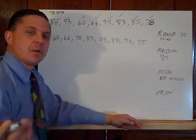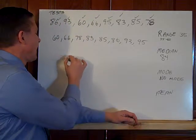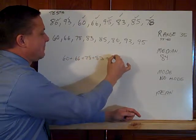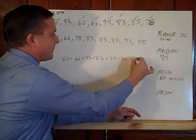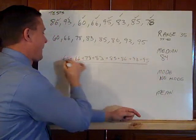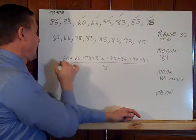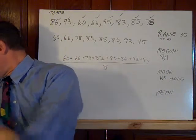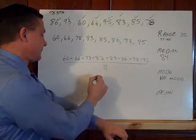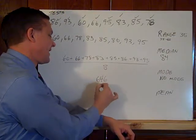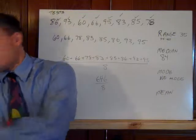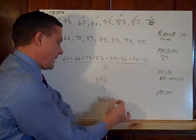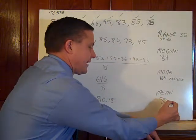Finally, the mean. This is a lot of times how we average classes. I have to sum up all eight scores and then divide by the quantity of eight. If I do this math, I get 646 over eight. And if I take 646 divide by eight, I got 80.75. So maybe in my class I would round to a tenth and call the mean 80.8.